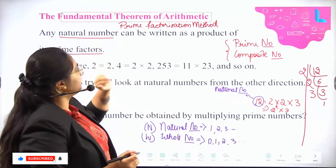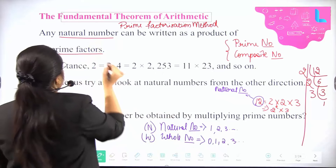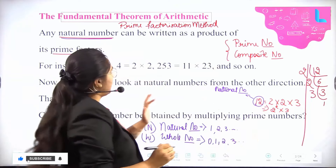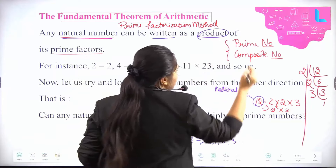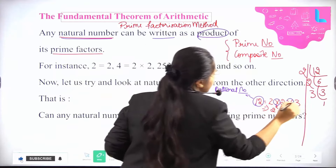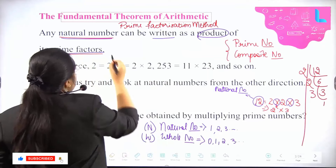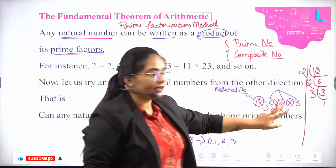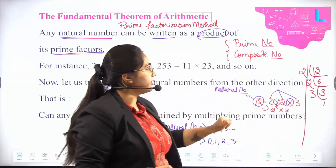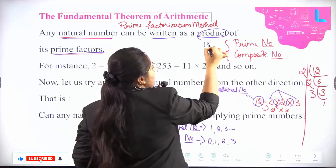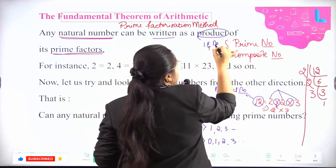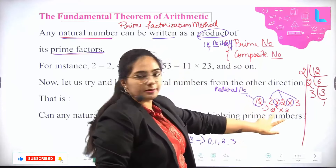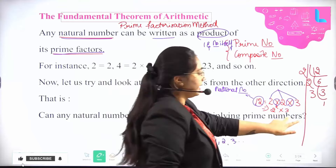In this Fundamental Theorem of Arithmetic, any natural number — in our example the number 12, which is a natural number — can be written as a product of prime factors. The prime factors here are 2, 2, and 3. What are prime factors? Prime numbers are divisible only by 1 and the number itself. For example, 2 is divisible only by 1 and 2; 3 also the same.